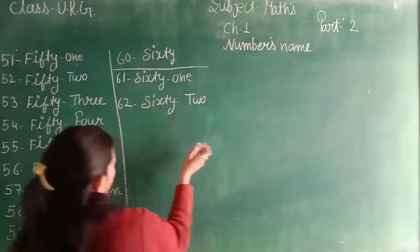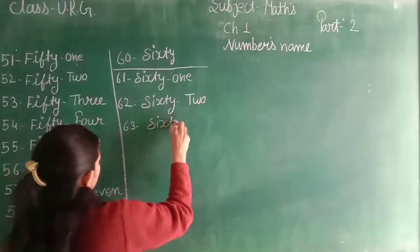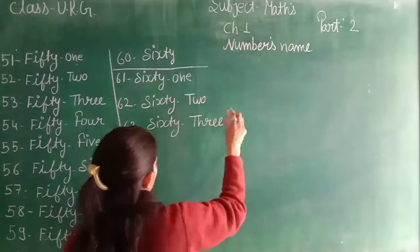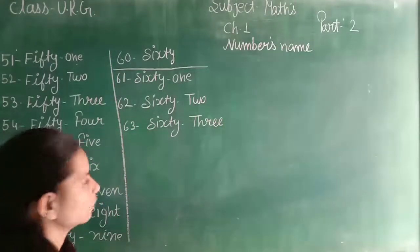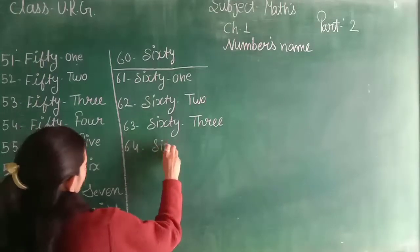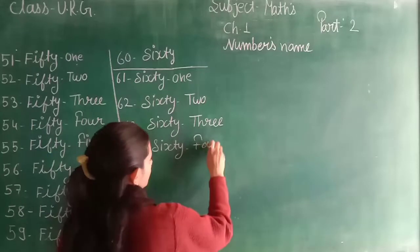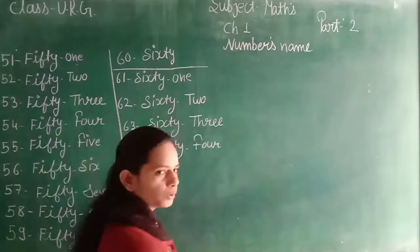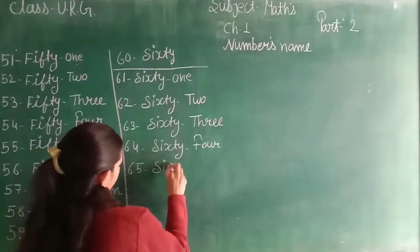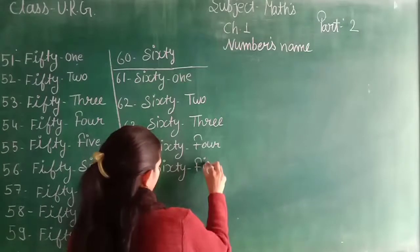63, S-I-X-T-Y, 63, T-H-R-E-E, 3. This is 64, S-I-X-T-Y, 64, F-O-U-R, 4. We have 65, S-I-X-T-Y, 65, F-I-V-E, 5.